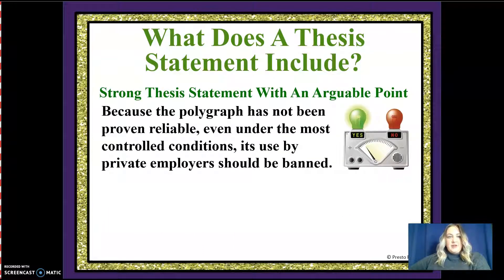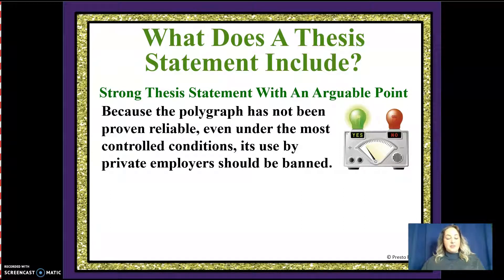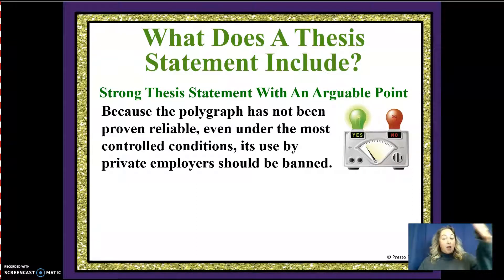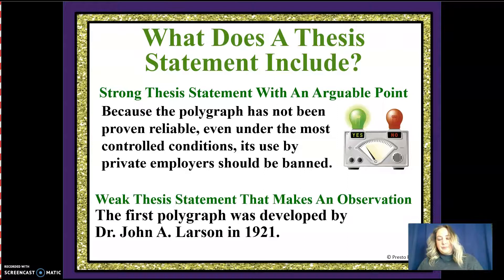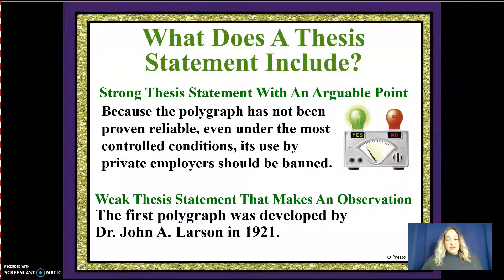So some examples here — something with an arguable point: 'Because the polygraph has not been proven reliable even under the most controlled conditions, its use by private employers should be banned.' This is a good thesis statement because it gives us the topic — the polygraph — and then the argument: it's not proven reliable, so that is why it's a good thesis statement. A weak thesis statement would be: 'The first polygraph was developed by Dr. John A. Larson in 1921.' I can't argue with that — that's a fact, that's straight truth. I want to make sure my thesis statement has something I can argue about.